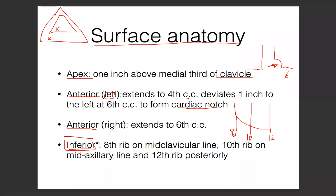This is basically the surface anatomy - you're supposed to know the inferior one mostly. They ask questions about clinical scenarios like someone getting stabbed with a knife, asking if the pleura is damaged in a specific area. For example, someone stabbed in the back at the level of T8 or T10 - is the pleura there? The answer is yes, because the pleura extends all the way to the 12th rib in the back. But if stabbed at the 12th rib anteriorly, it would not enter the pleura because the pleura only stops at the 8th rib anteriorly.